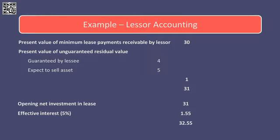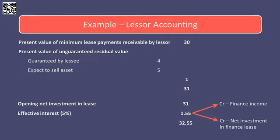That takes care of the balance sheet. In respect of the income statement, we want to earn some finance income, and this is simply a case of applying amortised cost to our net investment in the lease. The opening net investment in the lease is 31. Assuming an effective interest rate of 5%, this gives us finance income of 1.55. As we earn that finance income, the corresponding entry goes to the net investment on the balance sheet — so credit finance income, debit net investment in finance lease.